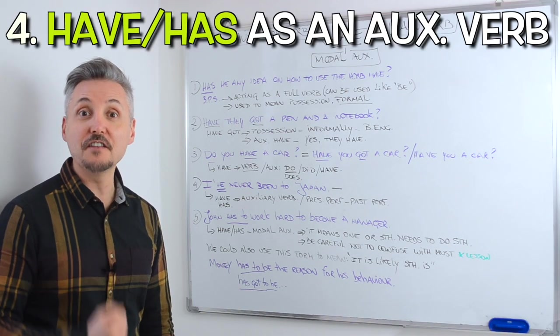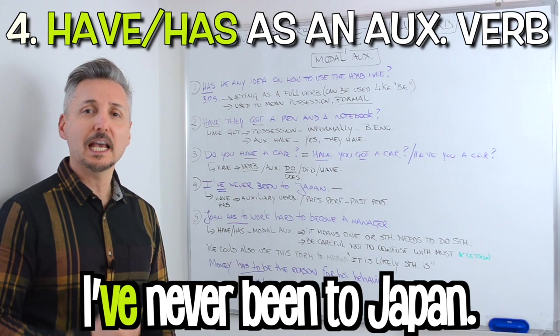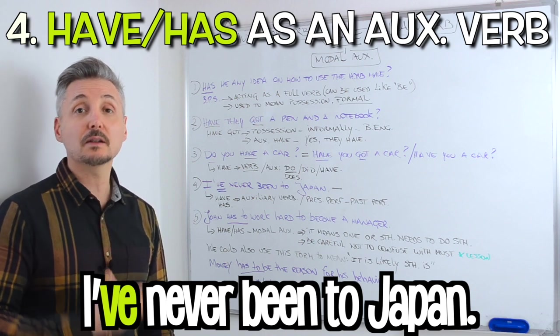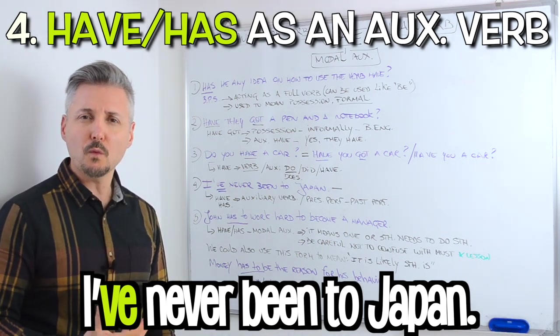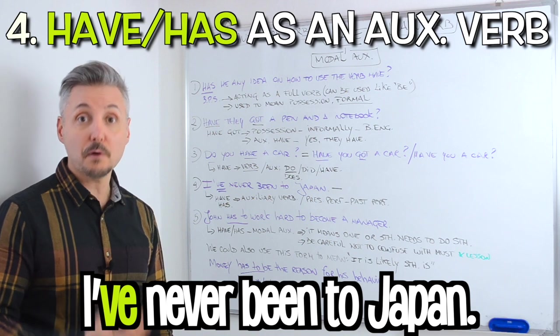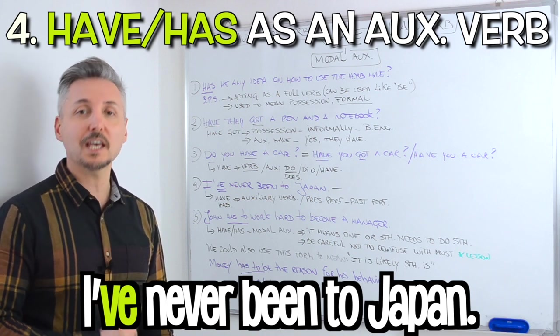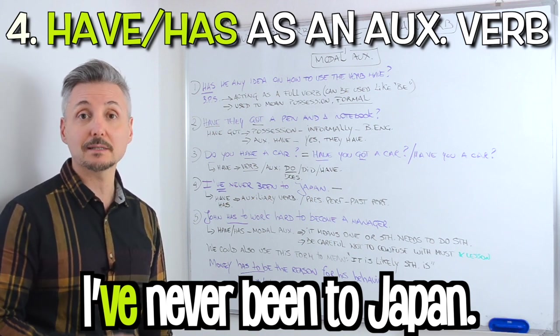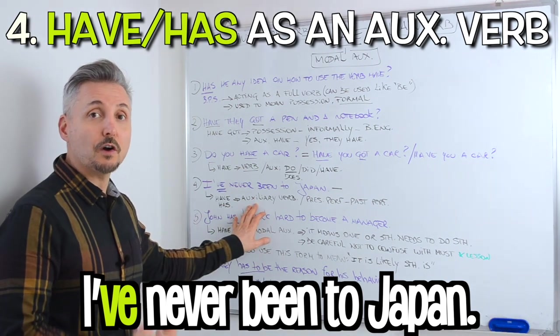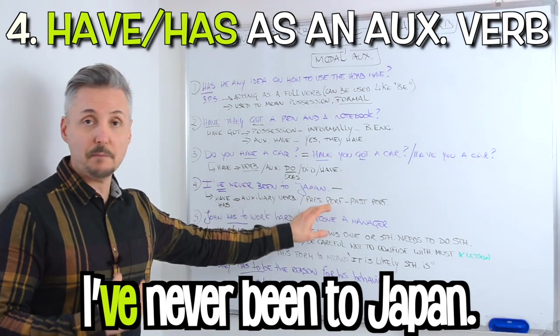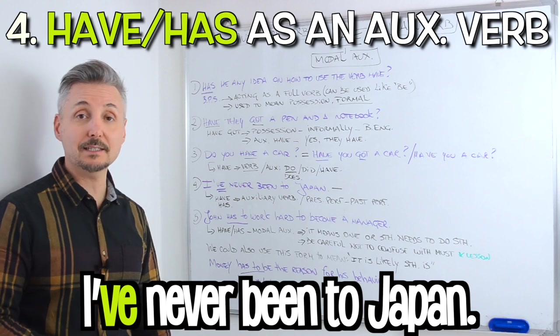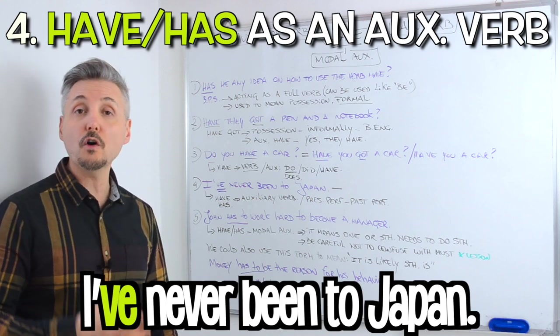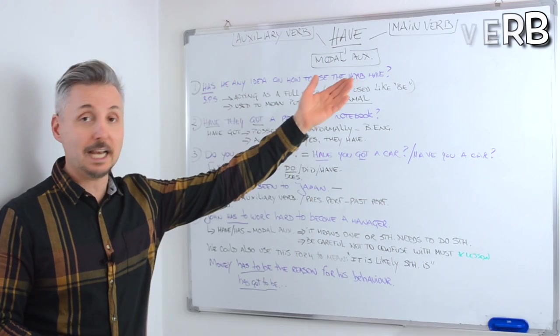The fourth example: I've never been to Japan. In this case, the verb have is an auxiliary verb. For what tense? For the present perfect in this case. But we can also use it for the past perfect. If you want to watch a lesson on the present perfect or the past perfect, you can click here.